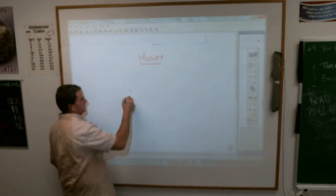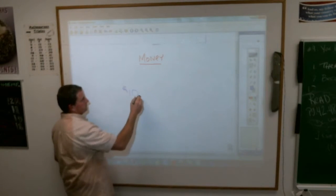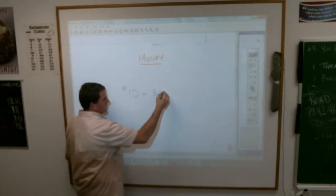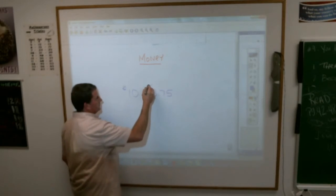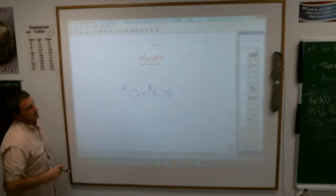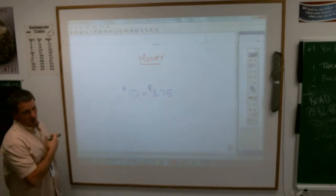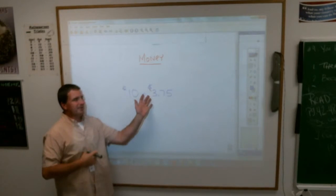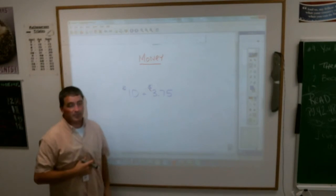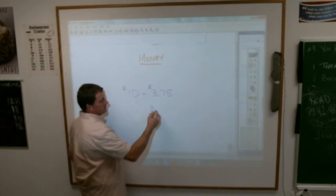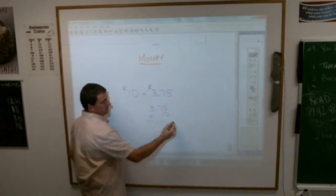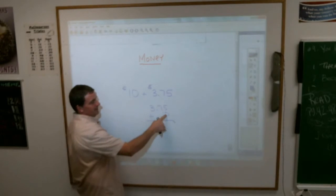$10 plus $3.75. And I think they want you to realize that sometimes when there's no cents, we don't write the cents. So when I'm adding this together, you have to be careful that you don't do this. It's not $3.75 plus $10, because you just made that $10 into ten cents if you put it over there.